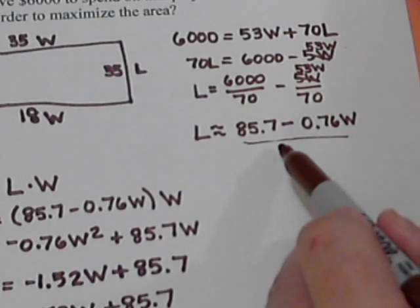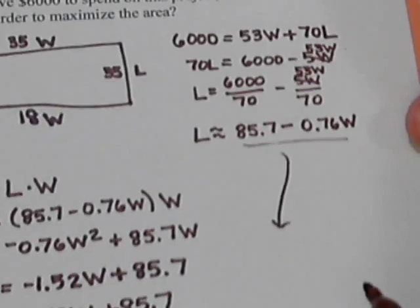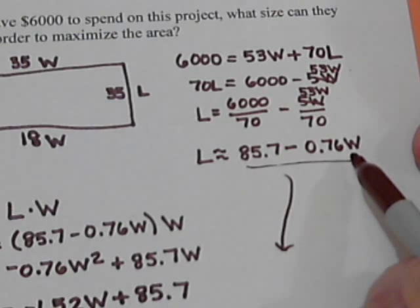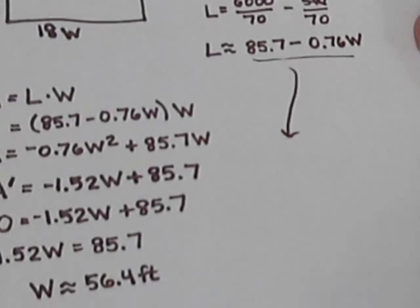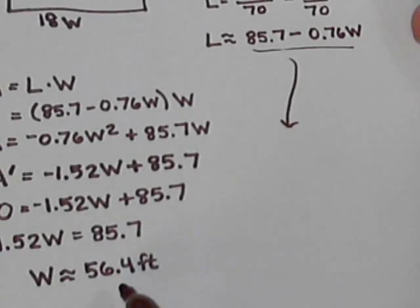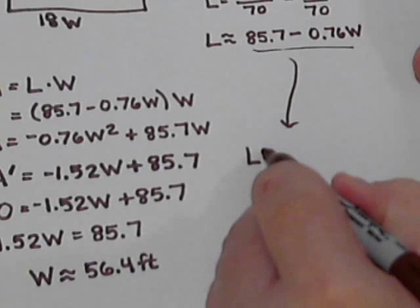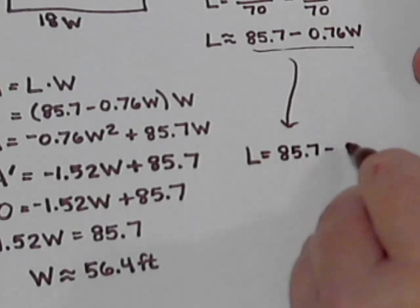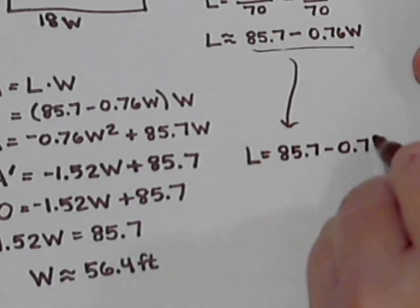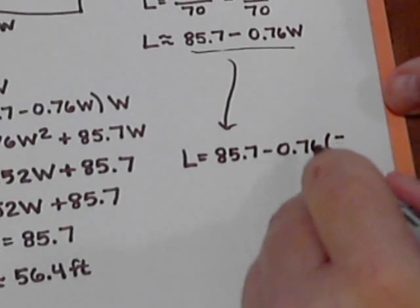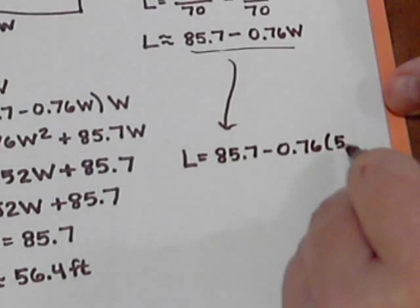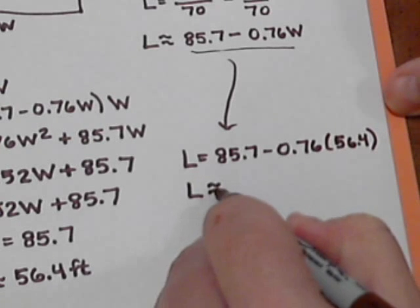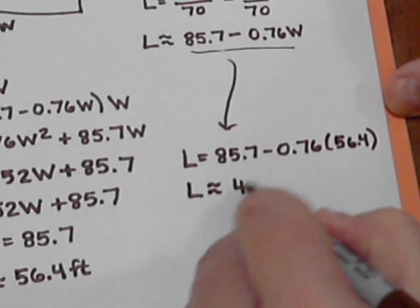Well, remember, we've got a formula for L. L is 85.7 minus 0.76 times W. Well, now we know that W is 56.4. So this gives us our length is 85.7 minus 0.76 times 56.4. And if we calculate that out, we end up with a length of right at about 43 feet.